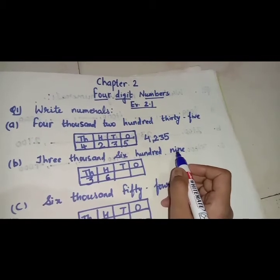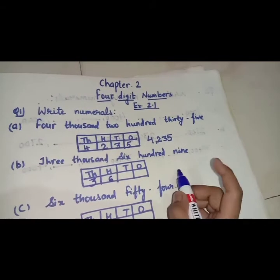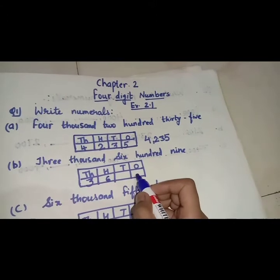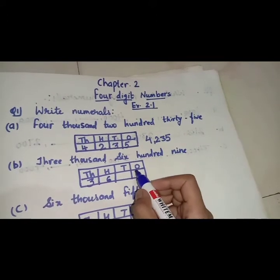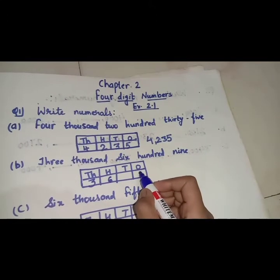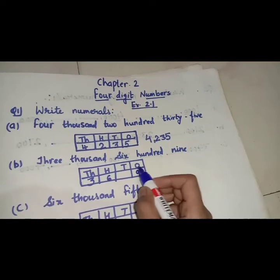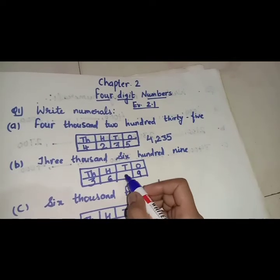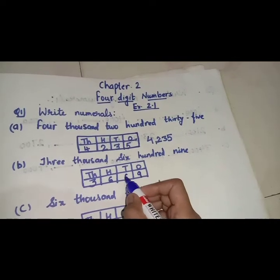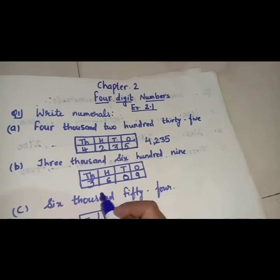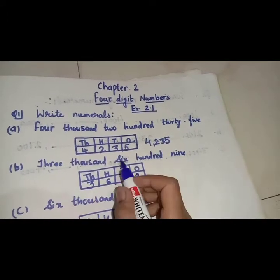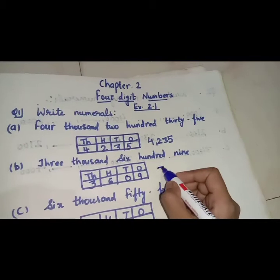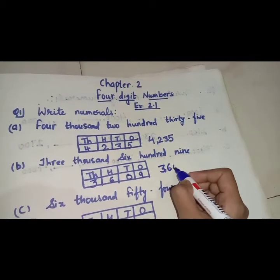Then 9. Here you can see 9 is a single digit number. So where will we write 9? We will write 9 at the ones place because 9 is a single digit. So what will we write at the tens place? We will write 0 here. So 3,609 — this is the numeral form of this number.